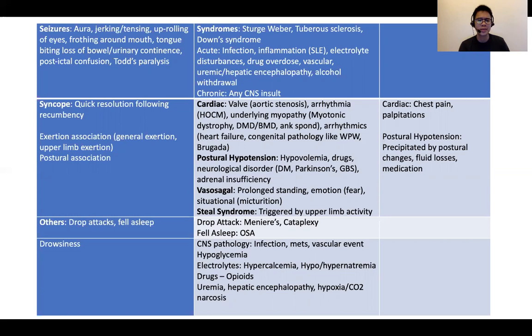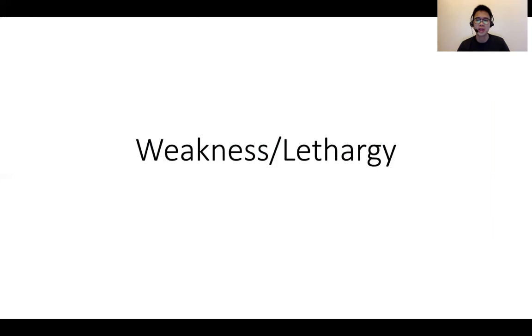Steal syndrome is also important. If patients' symptoms are associated with upper limb activity such as movement of the arms, think of conditions such as Takayasu where vasculitis can contribute to steal syndrome, or some form of previous cardiac surgery with a BT shunt in situ. The drowsiness group is kept for completeness — I did encounter a practice case of someone falling asleep perceived as loss of consciousness in a patient with OSA background.